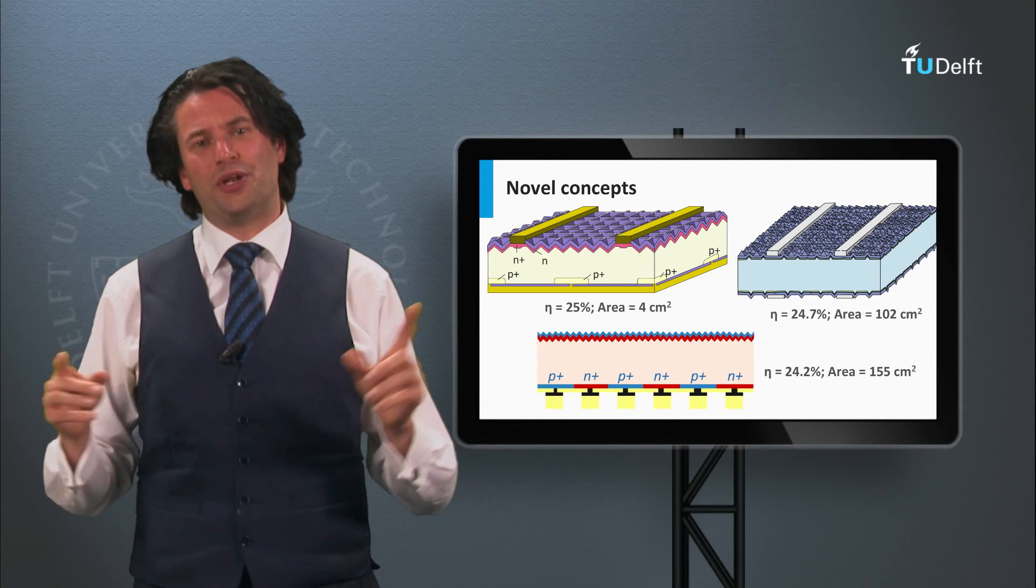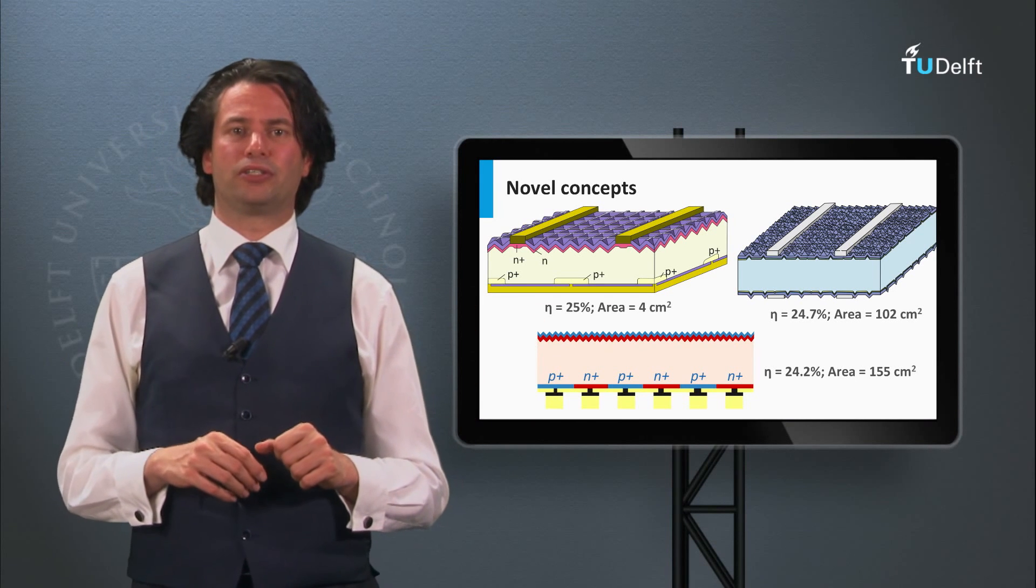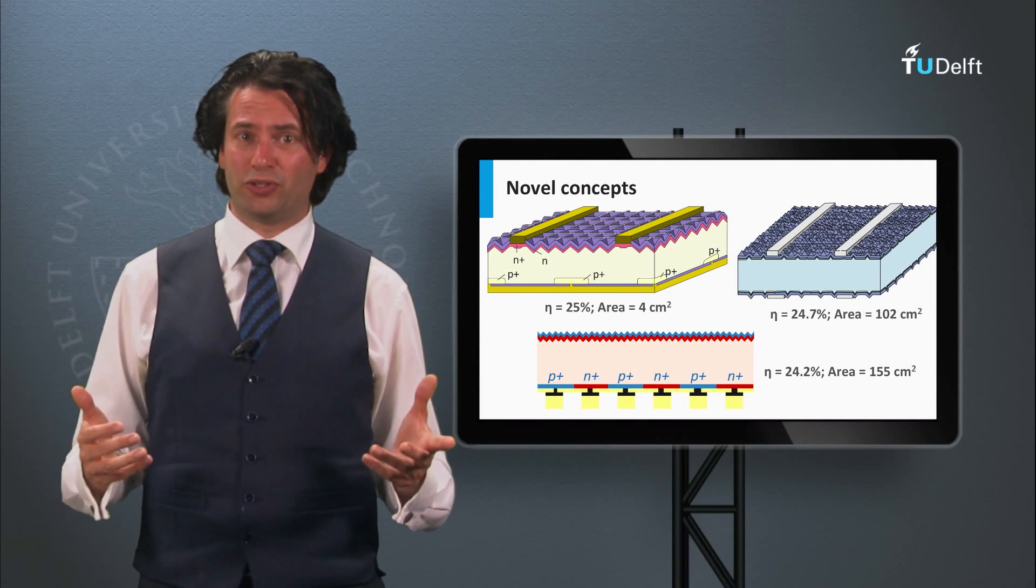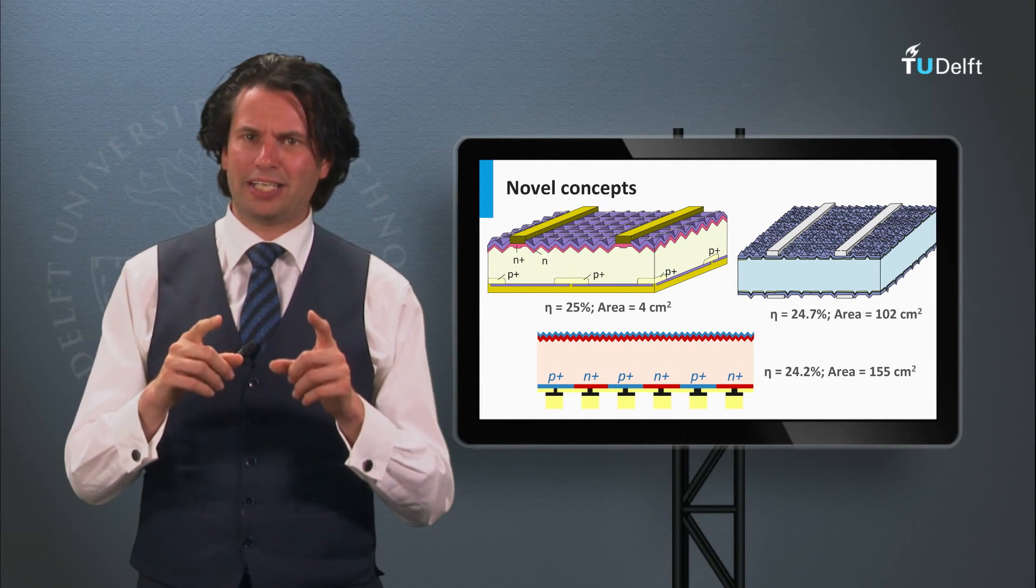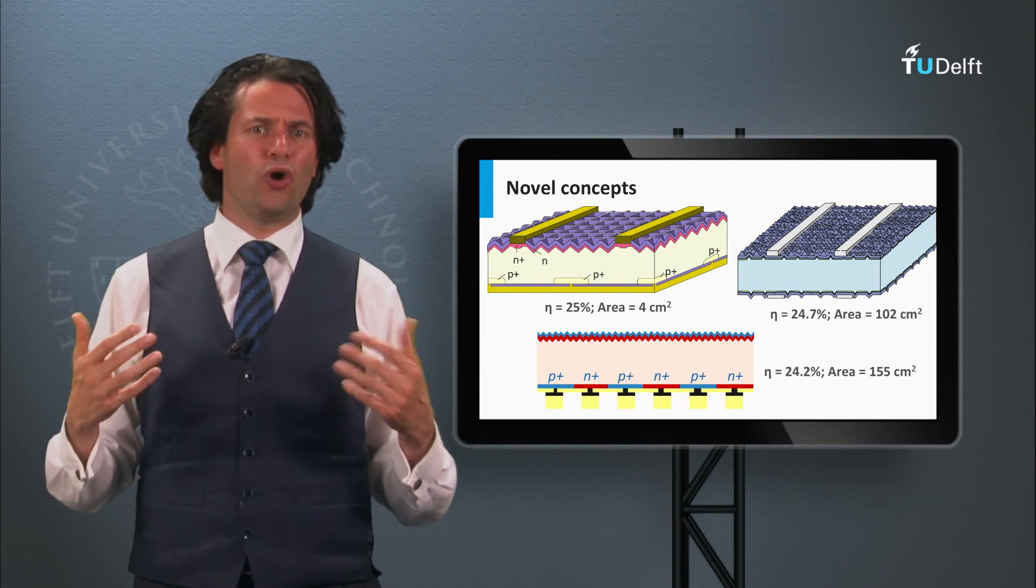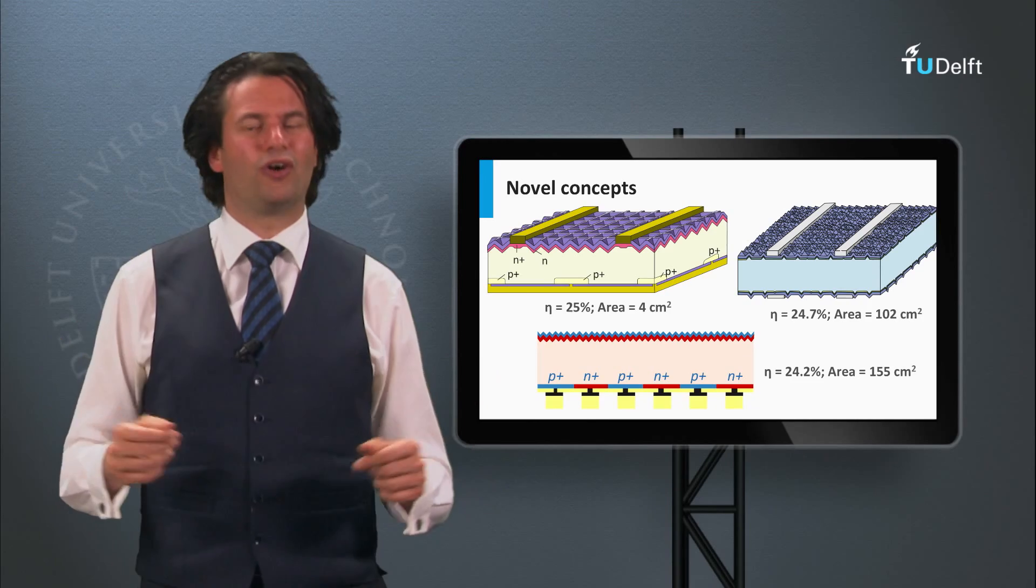Now we know the efficiencies of solar cells. However, in practice we install panels on our roof. In the next block we will answer the question, how do we make solar modules out of solar cells?